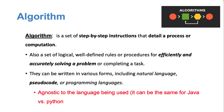There are different ways we can express an algorithm. One would be using natural language, the same way I discussed these examples. It could also be in the form of pseudocode, which I'll talk about shortly, or in the form of a programming language. Importantly, an algorithm is independent of the language used to write the code — once we have an algorithm, it could be written in Java or Python, and the algorithm stays the same.